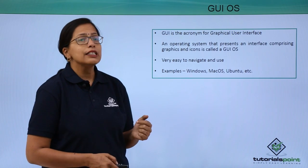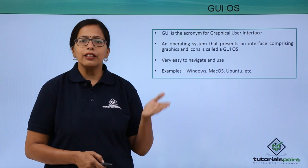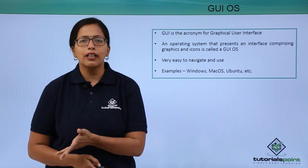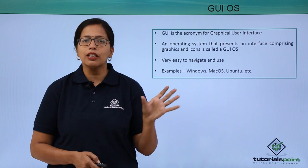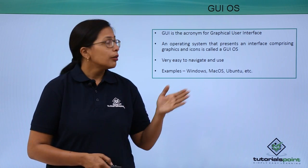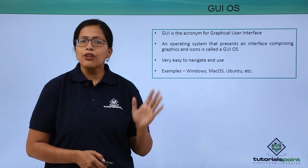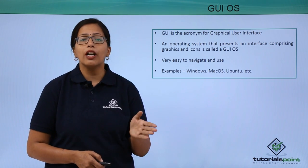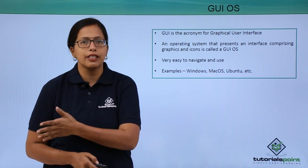The first is the GUI OS. Initially, when personal computers came into the market, the first operating system developed used the command line interface — MS-DOS. But users found it very difficult to use, so Microsoft came up with Windows, the first GUI, or graphical user interface, operating system.